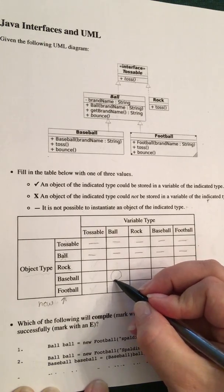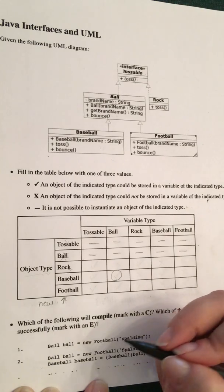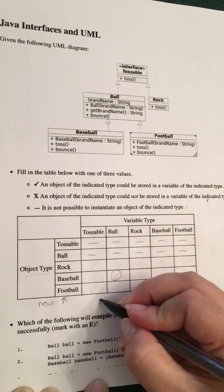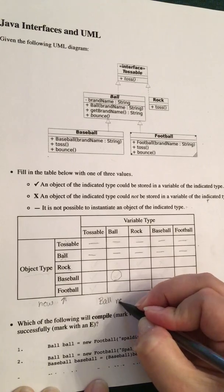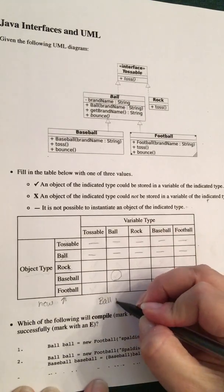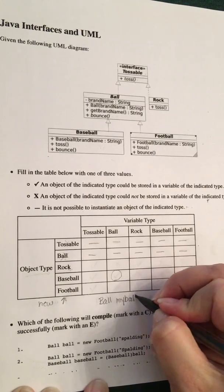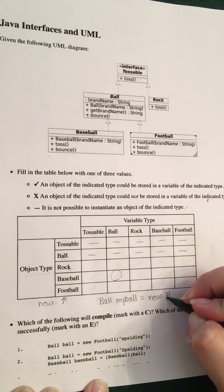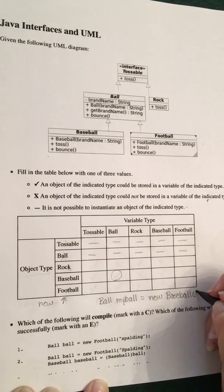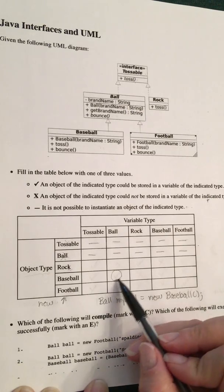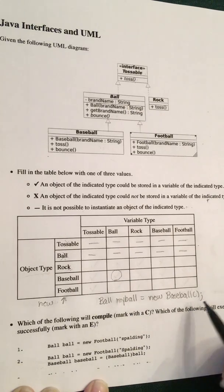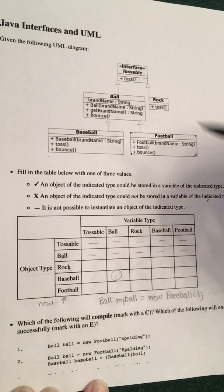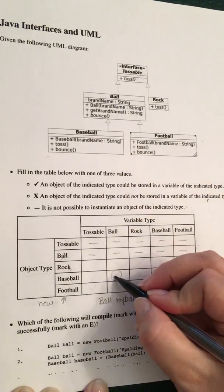Now let's look at a cell and see what it means to fill it out. The question is: can we declare a variable of this type and assign it a new object of the other type? For example, can we say 'Ball myBall = new Baseball()' — calling the constructor, which is why we put parentheses at the end. This cell is asking: can we write this statement and have it work correctly? Can I say 'new Baseball' and put it in a Ball variable? Yes, because Baseball is a Ball. So I'll put a check mark here.